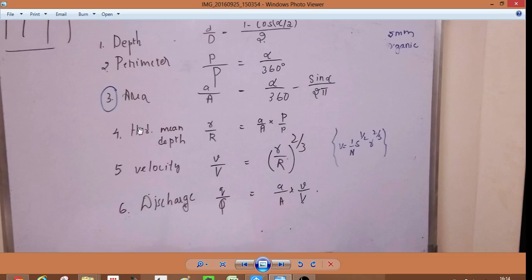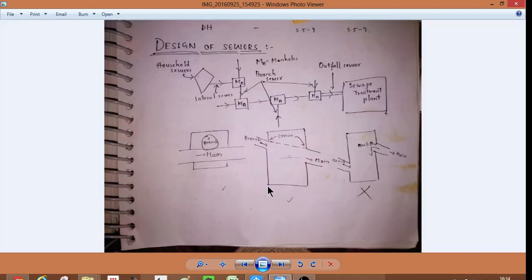Hydraulic mean depth r by R equals a by A divided by p. V by V equals 1 by S^(1/2) times R^(2/3). Q is equal to A and then design of sewers - you know this.